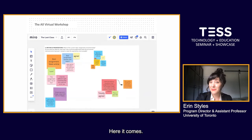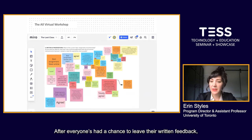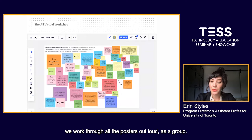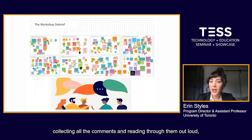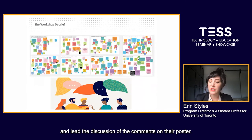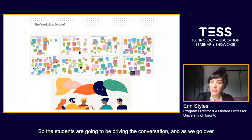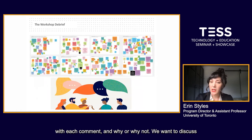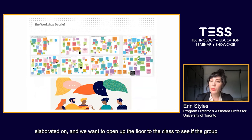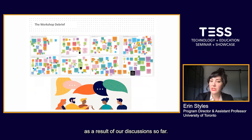So now we start the clock and wait for that feedback to start rolling in. After everyone's had a chance to leave their written feedback, we work through all the posters out loud as a group — on Zoom in our case. Rather than me collecting all the comments and reading through them out loud, I ask small groups of students to take ownership over individual posters and lead the discussion of the comments on their poster. As we go over each poster, we want to know whether the class generally agrees with each comment and why or why not, whether certain comments need to be elaborated on, and we open up the floor to see if the group has any additional feedback arising from the discussion.